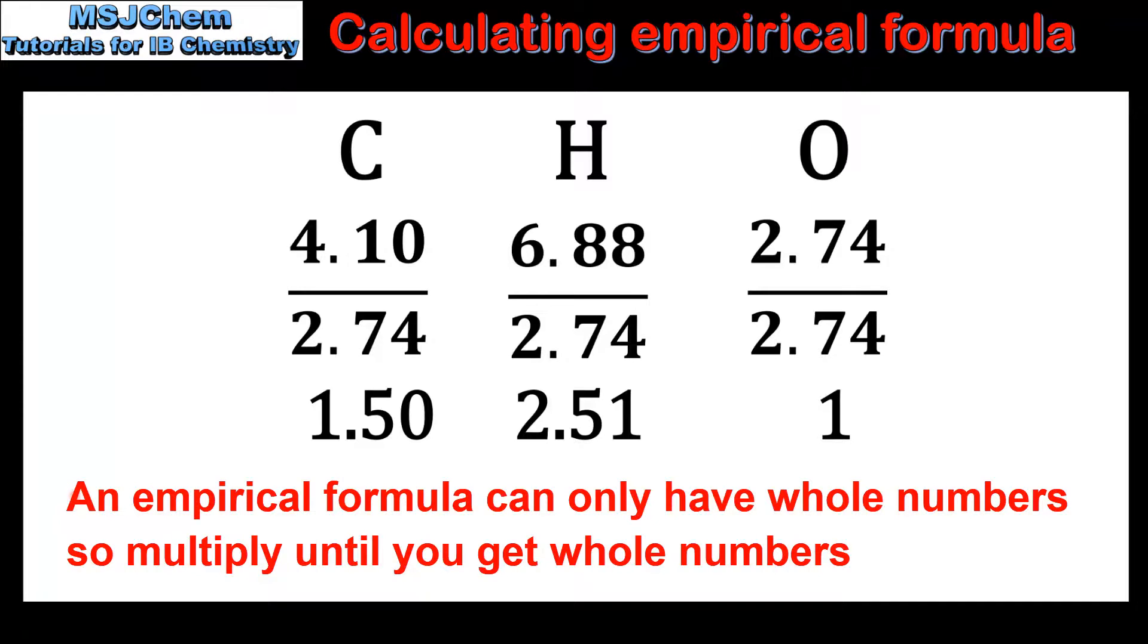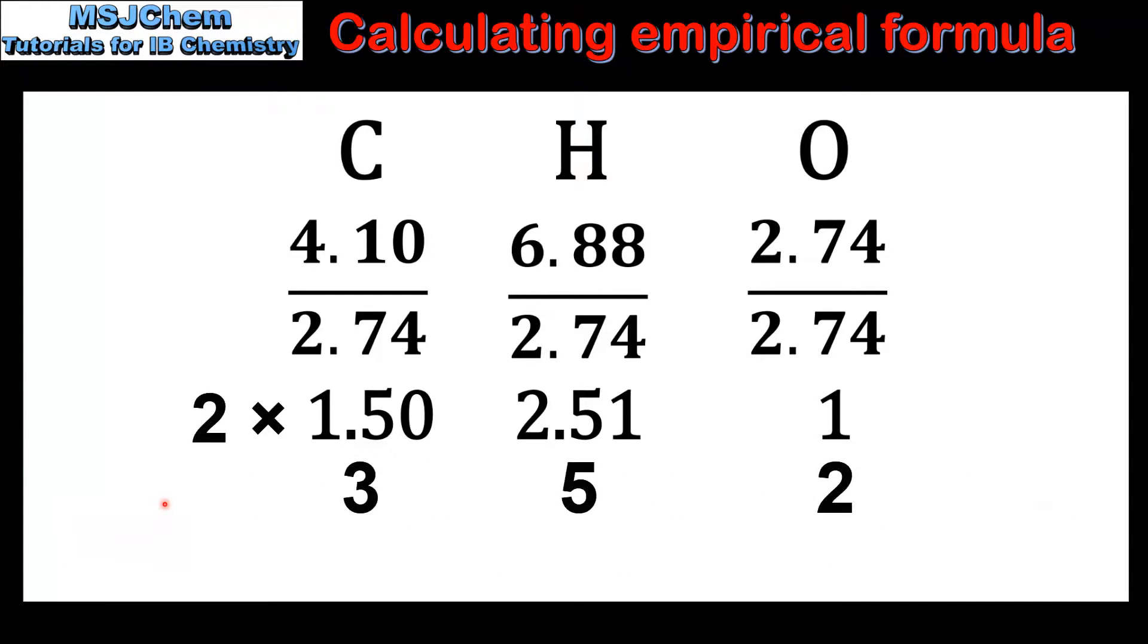Empirical formulas can only contain whole numbers. So we need to multiply each of these numbers by 2 to get 3 for carbon, 5 for hydrogen, and 2 for oxygen, and here we have the empirical formula, which is C3H5O2.